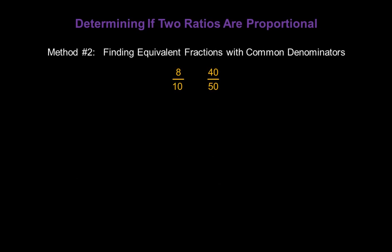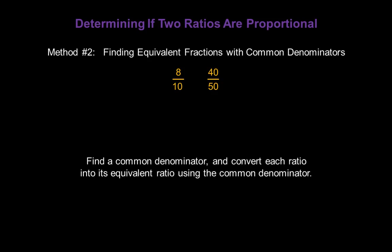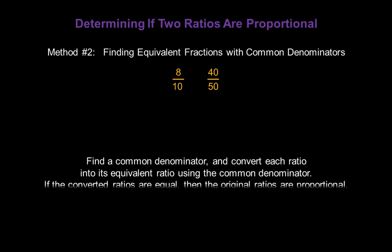Method number 2: we can find equivalent fractions with common denominators. Find a common denominator and convert each ratio into its equivalent ratio using that common denominator. If the converted ratios end up being equal, then the original ratios are proportional.